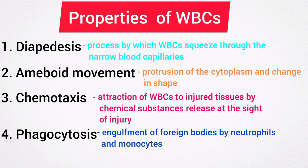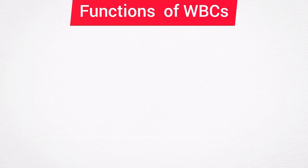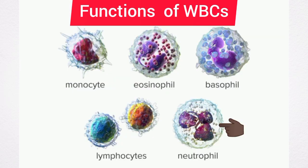Now let's talk about the functions of white blood cells. Neutrophils play an important role in the defense mechanism of the body. Along with monocytes, neutrophils provide the first line of defense against invading microorganisms. The neutrophils are free cells in the body and wander freely through the tissues, and practically no part of the body is spared by these leukocytes.